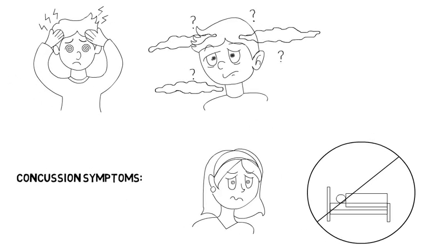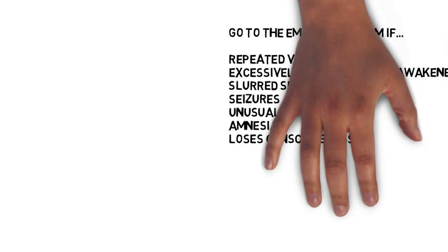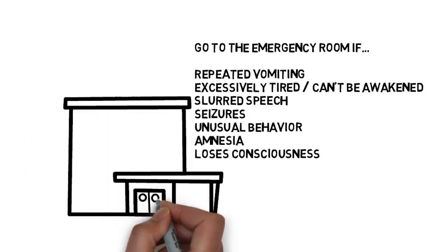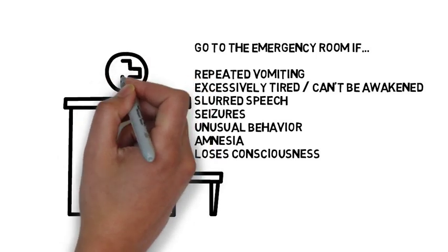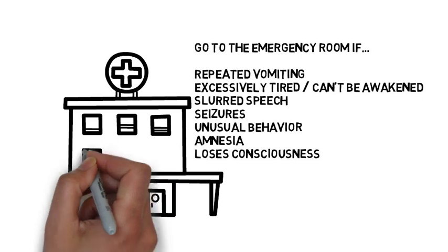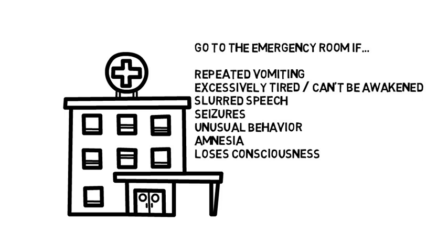Every individual will experience symptoms differently and may experience some or many of these symptoms. Call 911 or go to the emergency room immediately if a person with a concussion has repeated vomiting or increasing nausea, is excessively tired or cannot be awakened, develops slurred speech, convulsions or seizures, becomes increasingly confused, restless, agitated, or has unusual behavior, has amnesia of recent events, or loses consciousness.